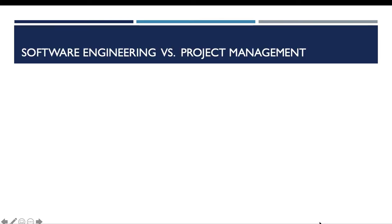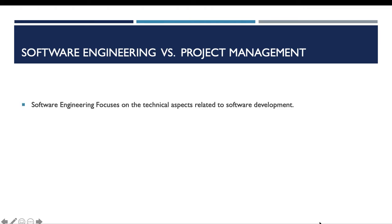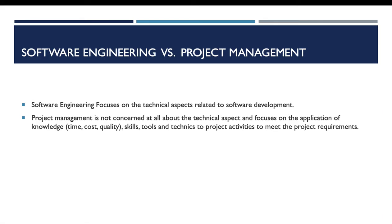For a quick answer, both software engineering and project management are a process. The software engineering process is about the development, operation, and maintenance of software — it focuses on the technical aspects. The project management process is not concerned with technical aspects at all; instead it focuses on the application of knowledge, skills, tools, and techniques to project activities in order to meet project requirements.